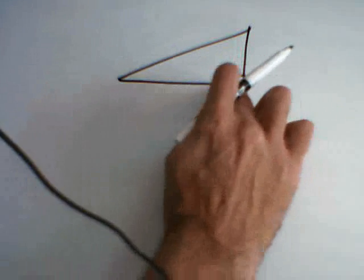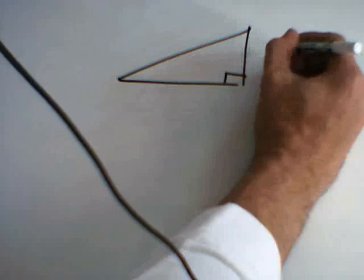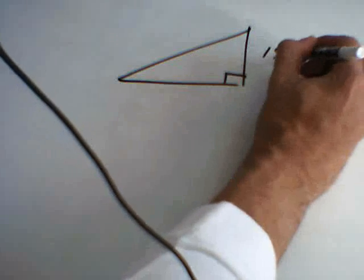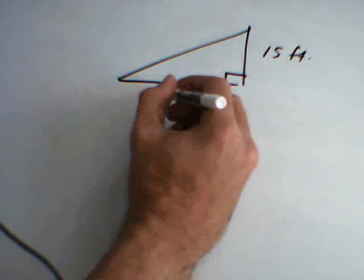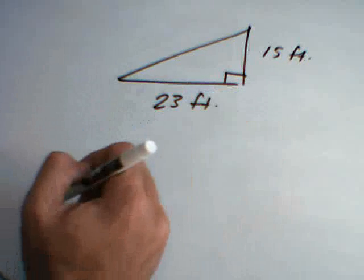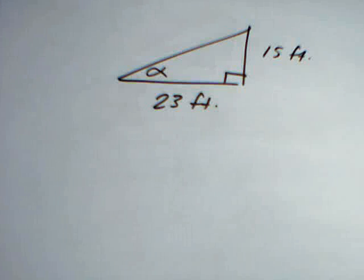So, suppose we had a right triangle where we knew that the opposite side was 15 feet and that the adjacent side was, let's say, 23 feet. And our goal here is to locate the value of angle alpha.